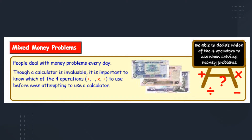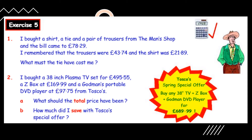We're getting towards the end of money now and as you can see here it says mixed money problems. This is going to use a lot of the skills that we used towards the end of decimals. For everything today in this lesson you can use a calculator. The trick here is knowing: are you adding, are you taking away, are you multiplying, are you dividing? There are two slides of sums today.